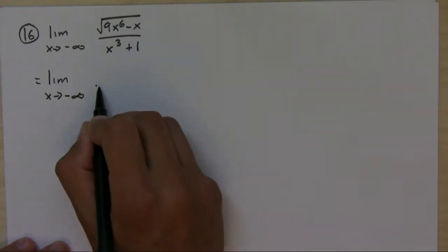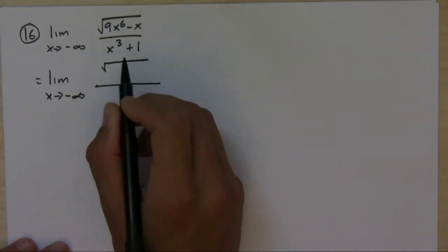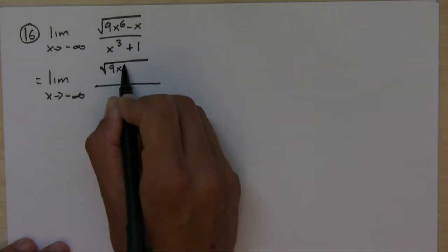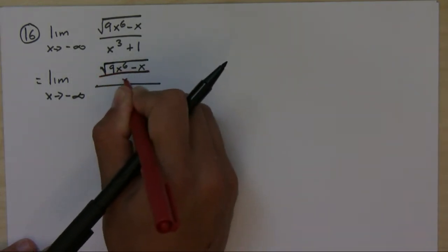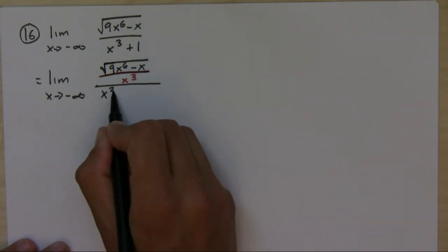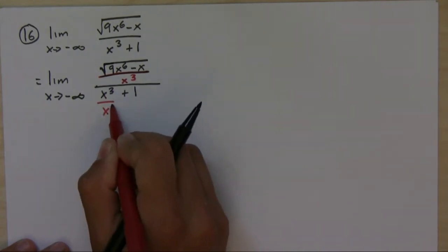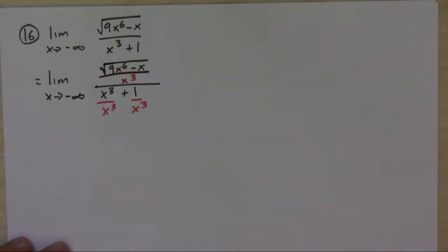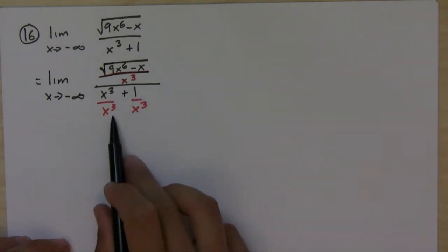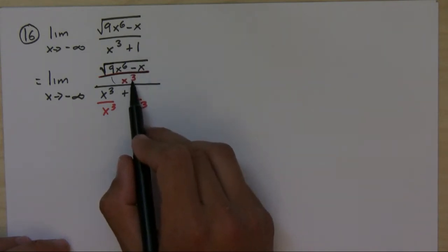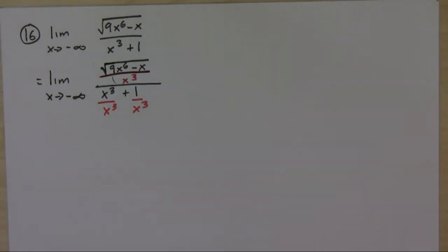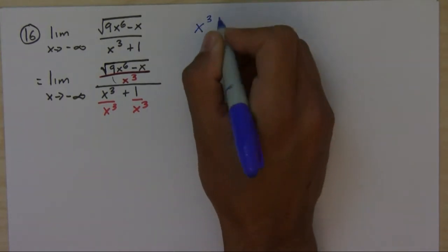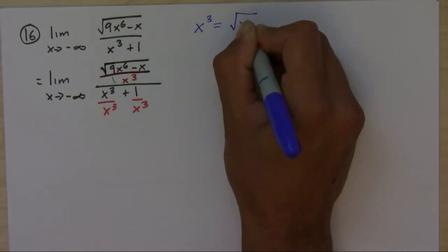That means we're going to divide by x to the third. But you have to be careful with the square root — you can't bring the x cubed inside quite yet. We have to wait a little bit. Now, I want to bring x cubed inside of the root, so I'll work this out on the side. x to the third is equal to the square root of x to the sixth.